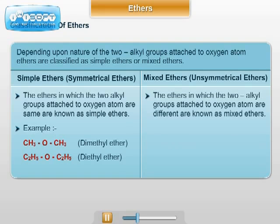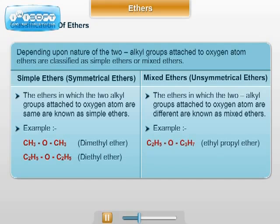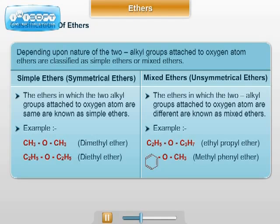Mixed ethers are those in which the two alkyl groups attached to oxygen are different; they are also known as unsymmetrical ethers. Example: C₂H₅OC₃H₇, ethyl propyl ether. Another example of a mixed ether is C₆H₅OCH₃, methyl phenyl ether.